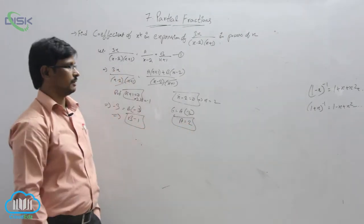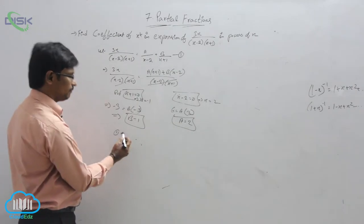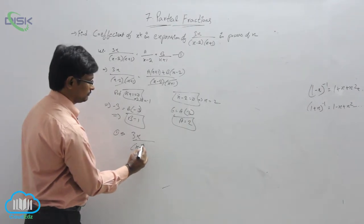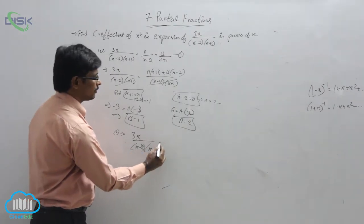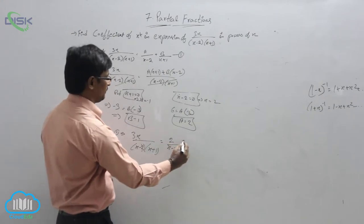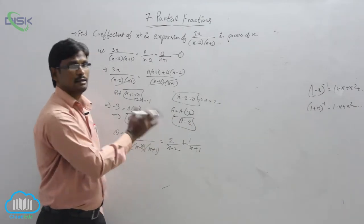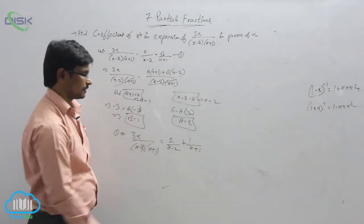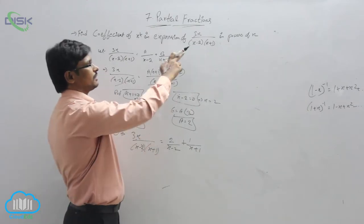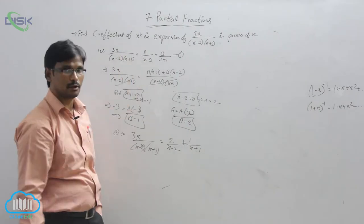We got the values A equals 2 and B equals 1. Now substituting these into equation 1, we get 2 over (x minus 2) plus 1 over (x plus 1). Till now we did the same as partial fractions. Now we need to convert these in terms of powers of x, and afterwards find the coefficient of x power 4.